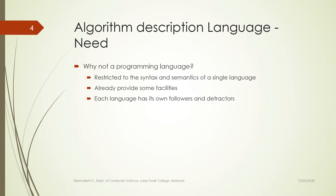Algorithm description language is very much needed because this is how an algorithm is going to be described. Although we do have so many programming languages like C, C++, and Java, we cannot use them to describe an algorithm. There are three main reasons. First, you will be restricted to the syntax and semantics of a single language. Second, the language already provides many facilities and functionalities which we need to develop from scratch. Third, each language has its own followers and detractors, and we need all people to use a common algorithm description language.